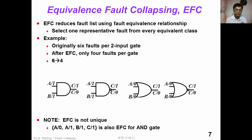For two-input gates, we can see that originally there are six faults for each gate. After equivalent fault collapsing, we only choose four faults for each gate. For example, we choose A stuck-at-1, B stuck-at-1, C stuck-at-0, and C stuck-at-1 for this AND gate. Please note that equivalent fault collapsing is not unique — for this AND gate, we could also choose A stuck-at-0 instead of C stuck-at-0, along with A stuck-at-1, B stuck-at-1, and C stuck-at-1.